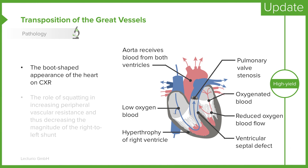Additional high-yield points include the boot-shaped appearance of the heart on chest X-ray, and the role of squatting, which increases peripheral vascular resistance and thus decreases the magnitude of the right-to-left shunt.